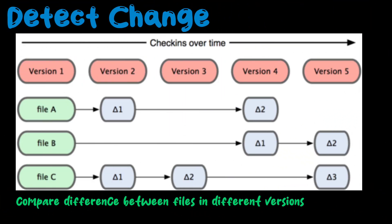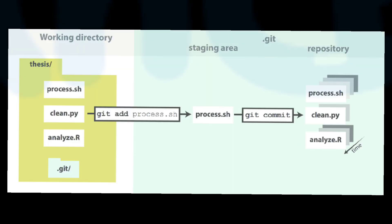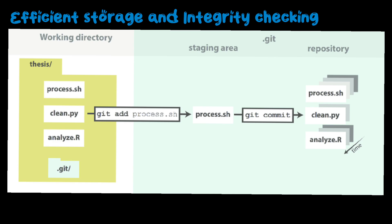To detect changes, Git tracks changes to files by comparing snapshots and recording the differences. Even if you add a new line to a file, Git detects the change and records it as a modification. Git stores data as compressed snapshots, making it efficient for storing and retrieving project history. Even for large projects, Git only stores the changes between snapshots, not the entire project.